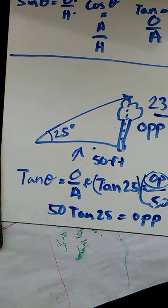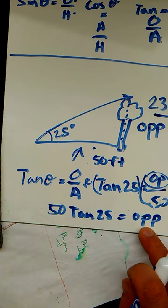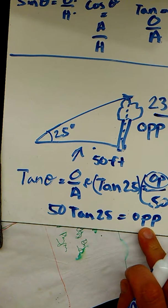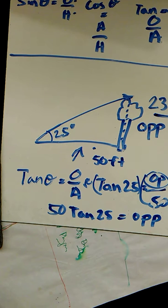So all I did was I took 50, multiplied it by the tangent of 25, and I got the opposite side. I hope that helps. And I will be creating another video on how to use these functions to come up with the angles. Thank you, and have a wonderful day.